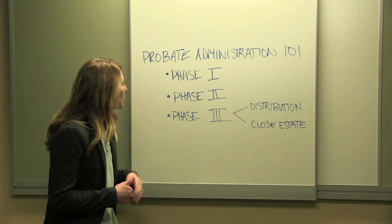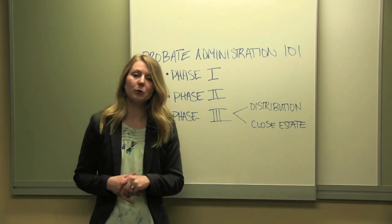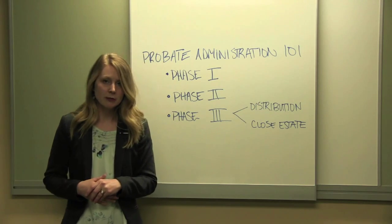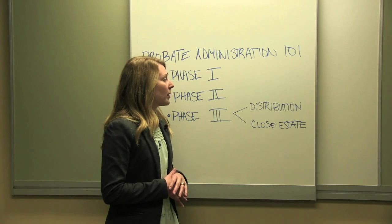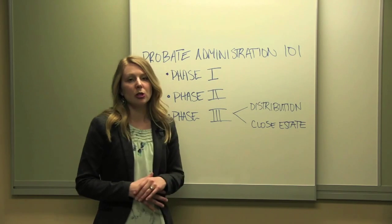Today we're going to discuss phase three, which is the distribution and closing phase. The distribution of the probate assets occurs one of two ways.